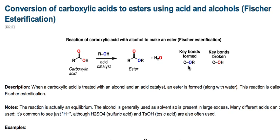If you look at what we've formed and what we've broken, the key bond formed is a carbon-to-oxygen bond and we've broken a carbon-to-oxygen bond as well. I've used color coding here: the red oxygen on our carboxylic acid is the oxygen that becomes water, and the blue oxygen from the alcohol is what adds on to our ester. We're not just breaking off H and adding R — we're actually breaking off OH and adding OR.